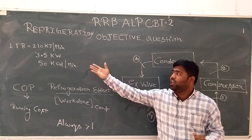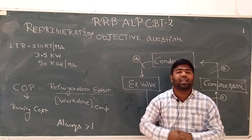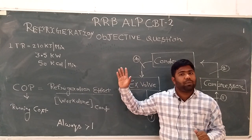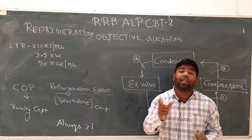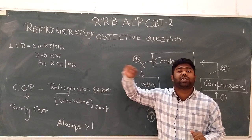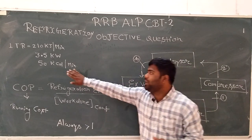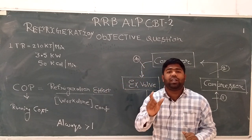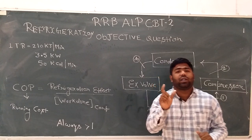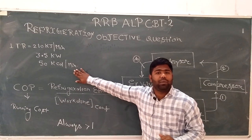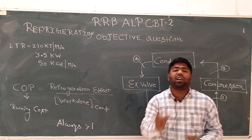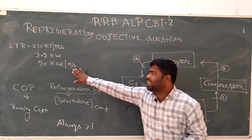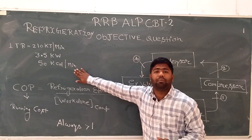Actually, what is 1 Ton of Refrigeration? It is 210 kilojoules per minute. This can be asked in your RRB ALP objective exam, so I am telling you: 1 Ton of Refrigeration equals 210 kilojoules per minute, 3.5 kilowatts, or 50 kilocalories per minute.